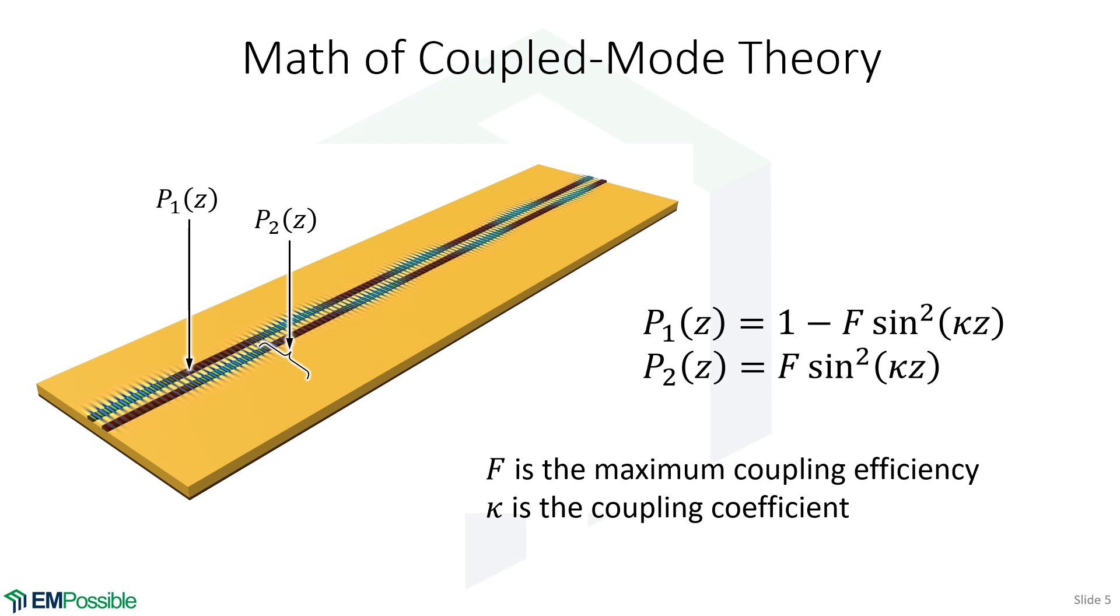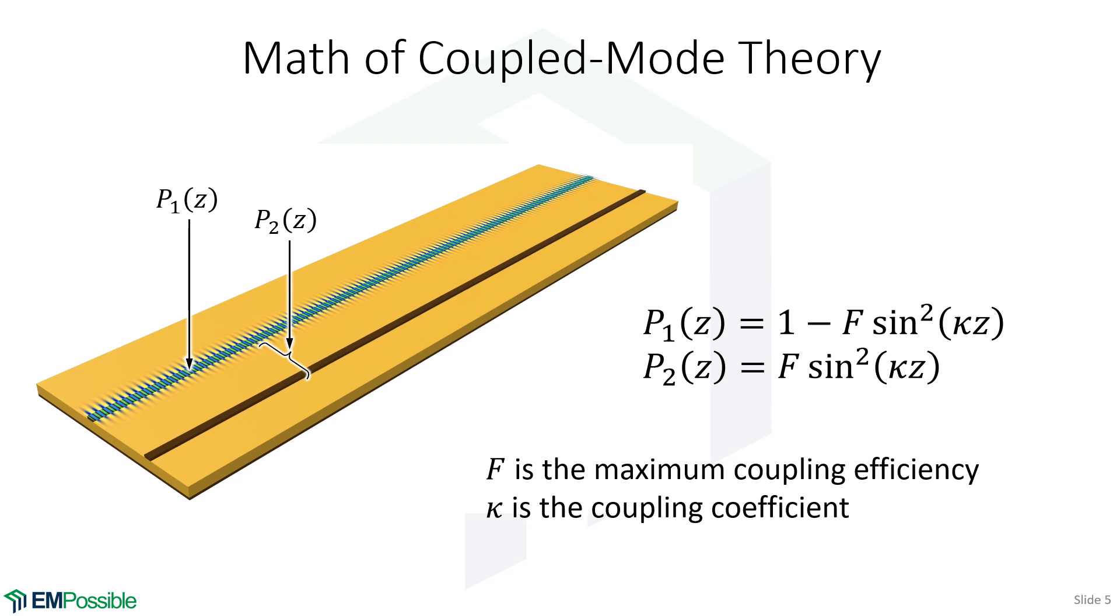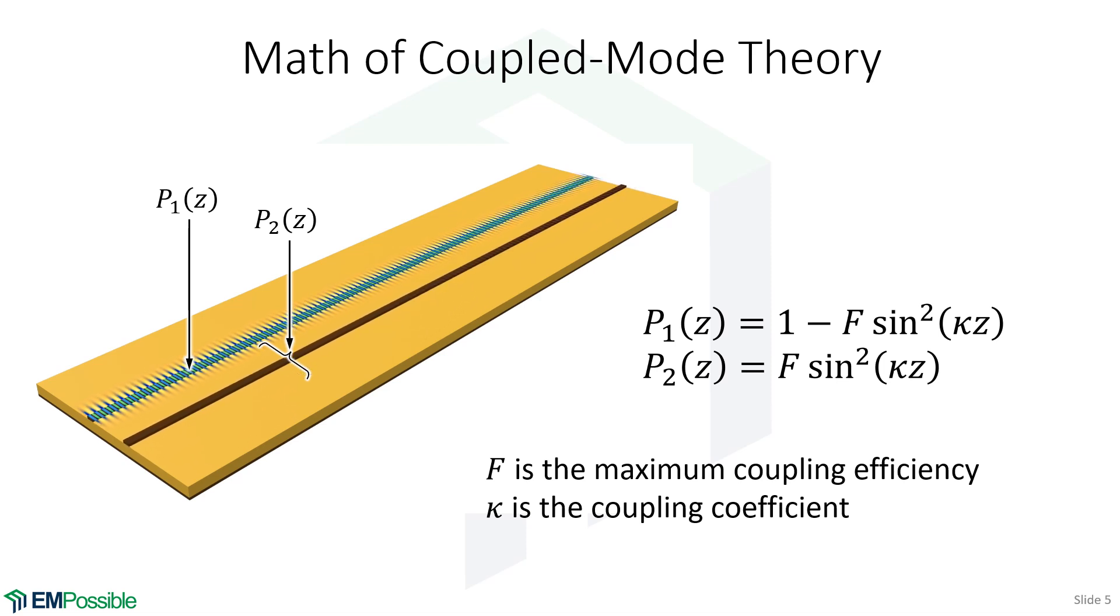This kappa term is the coupling coefficient, and I'll define that a little more in detail on the next slide. But suffice to say it defines how quickly the signal will couple from one line over to the other. So the closer those lines are, the larger this kappa will be.